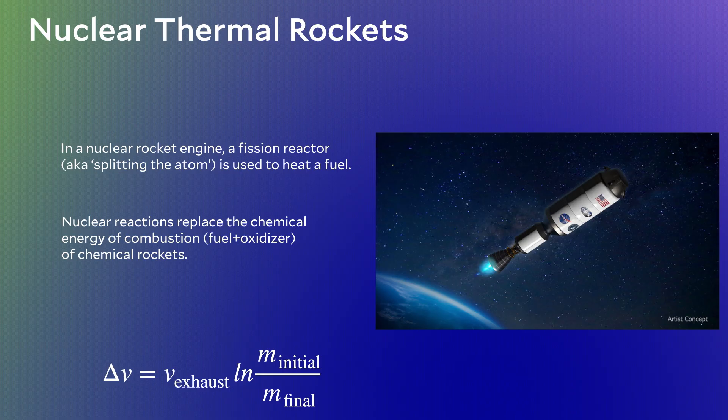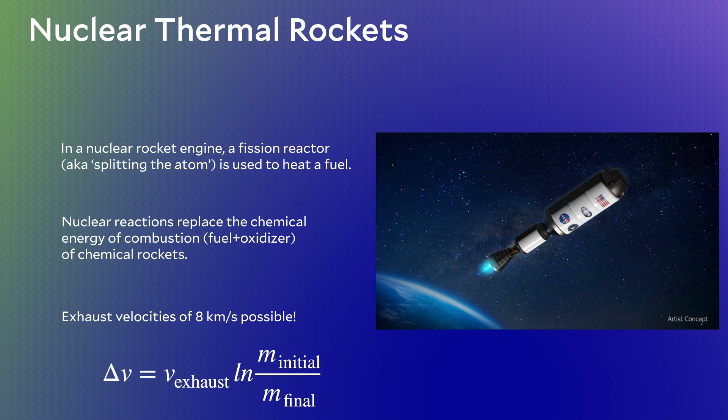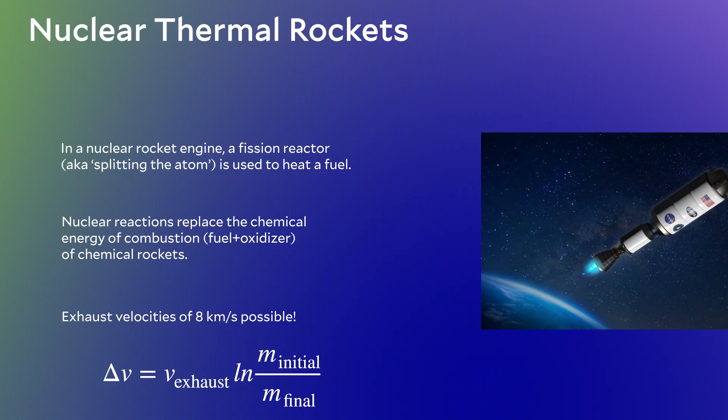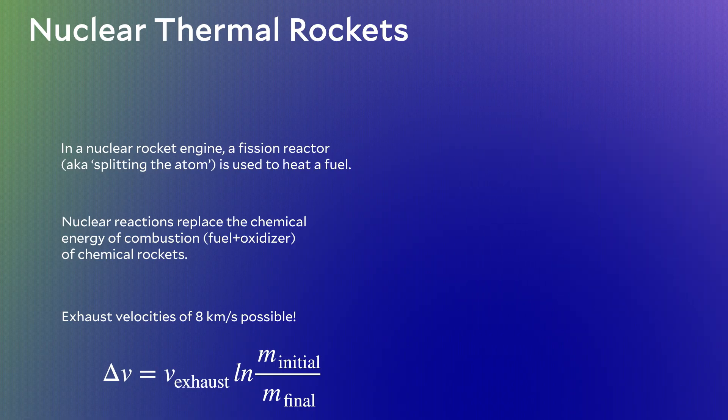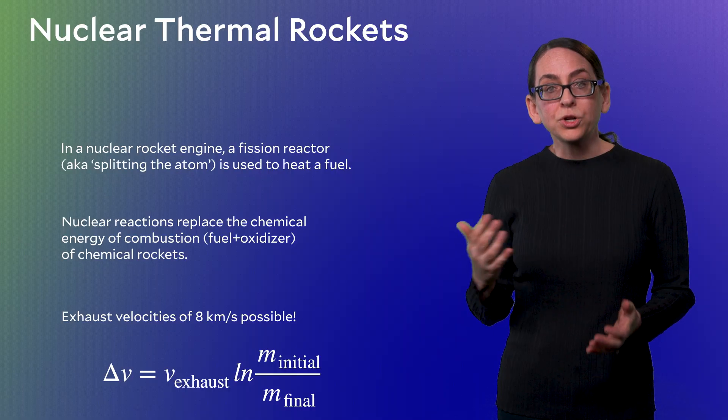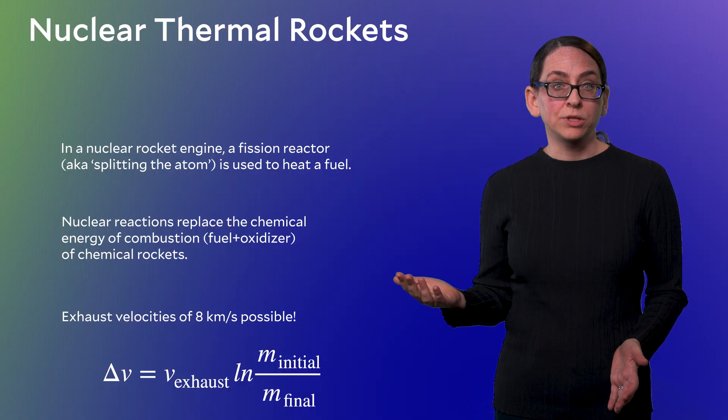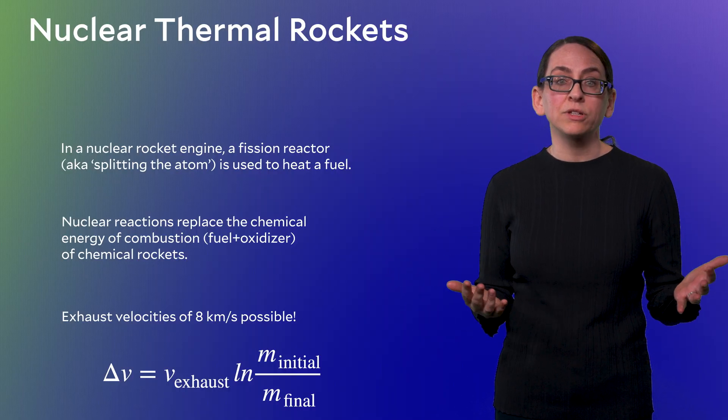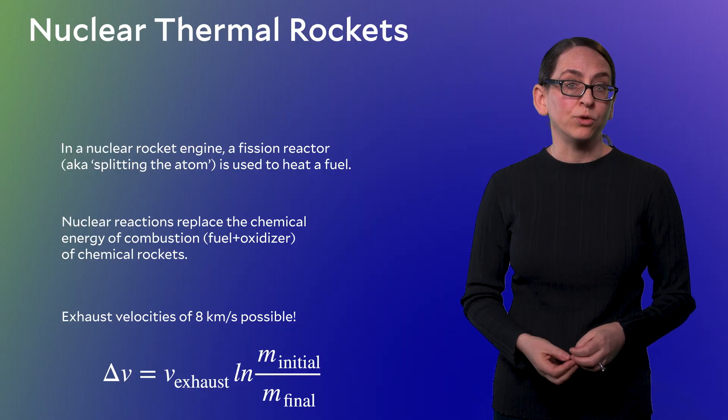The exhaust velocities possible with nuclear thermal rockets are slightly larger than chemical rockets, roughly three to five times larger. And if we think back to the rocket equation, that's pretty big, that directly translates into larger delta Vs, larger velocities. Larger velocities means shorter travel times, reducing, say, a seven-month trip out to Mars down to a few weeks.